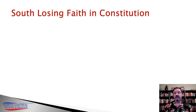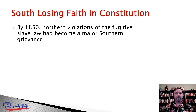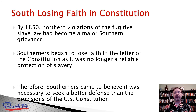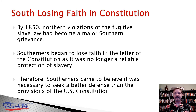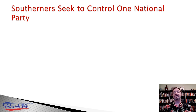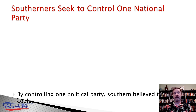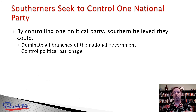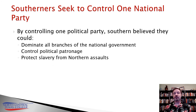Southerners began to lose faith in the Constitution. By 1850, Northern violations of the Fugitive Slave Law had become a major Southern grievance, and they began believing the Constitution was no longer a reliable protection of their peculiar institution. So they began to look elsewhere — seeking a better defense than what the Constitution itself provided. They came to believe it was necessary to take control of a single national political party so they could dominate all branches of the national government, control political patronage, and protect the institution of slavery from Northern assaults.